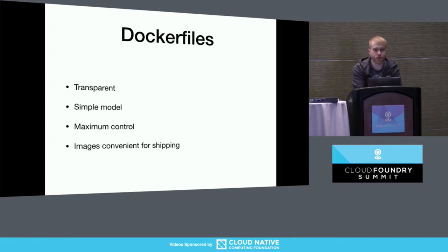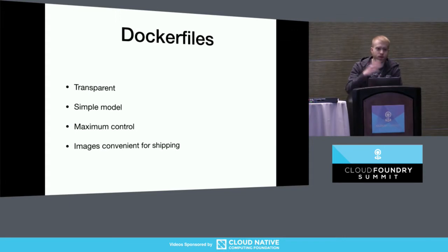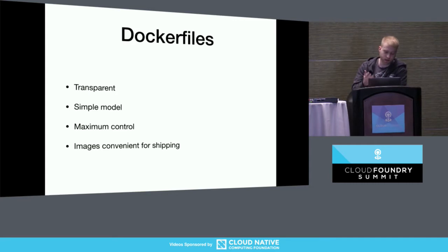Docker files build images that are really convenient for shipping to production because they're made of immutable layers that don't change. So you can know that you're deploying the same thing that you tested. People like those things and there are benefits to that.